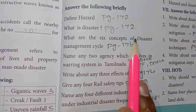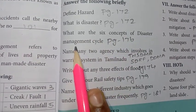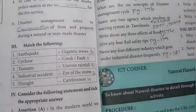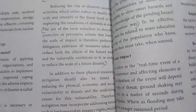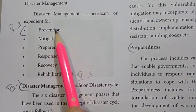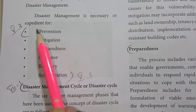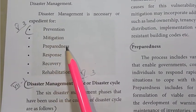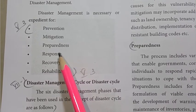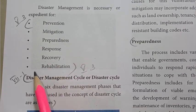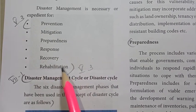Third question: what are the six concepts of the disaster management cycle? Refer to page number 176. The six concepts are: prevention, mitigation, preparedness, response, recovery, and rehabilitation.